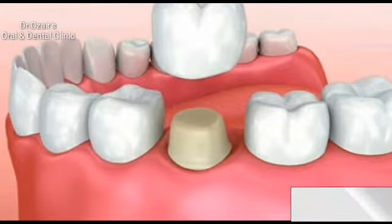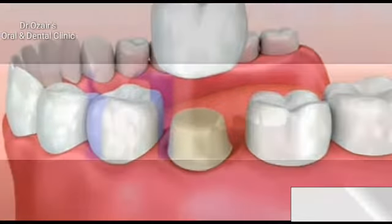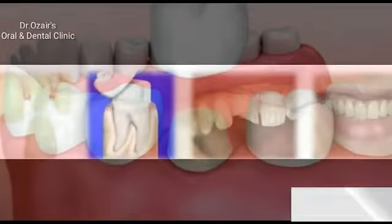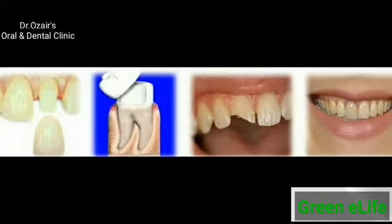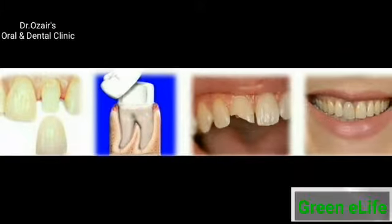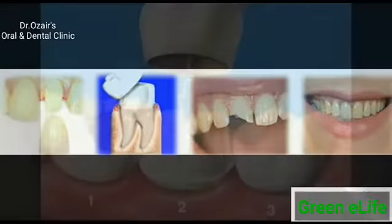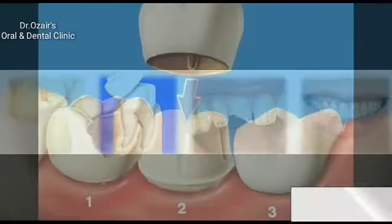Once the damaged, diseased, or dead pulp is removed, the remaining space is cleaned, shaped, and filled. This filling seals off the root canal.